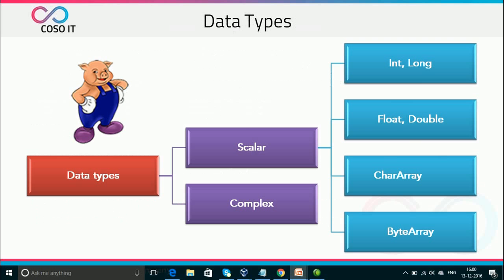In Pig Latin language there are two types of data types: Scalar and Complex. Scalar types are quite similar to other programming languages — int, long, float, double, char array, and byte array.